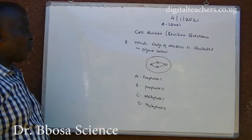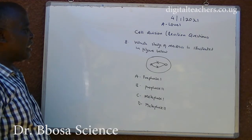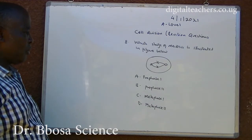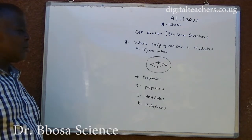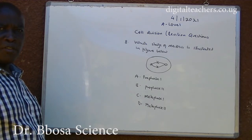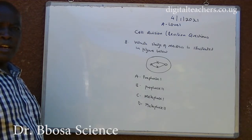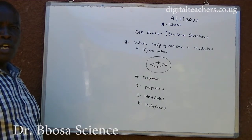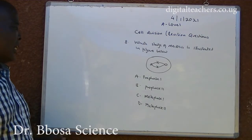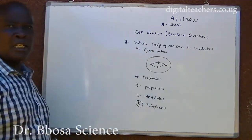Number 8. Which stage of meiosis is illustrated in the figure below? A. Prophase 1. B. Prophase 2. C. Metaphase 1. D. Metaphase 2. You can pause and answer. The answer is D.